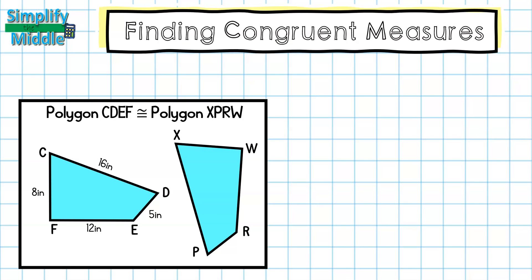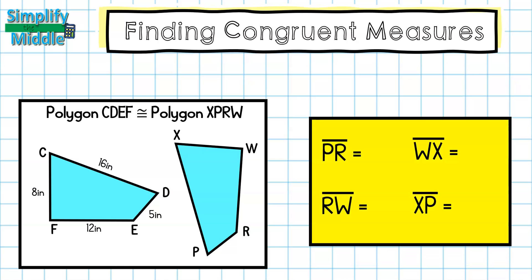Now I'm going to start finding the actual measures using the congruency statement. Line segment PR is written in the second and third position, so I find the second and third position on my first polygon, which is DE. That measure is five inches, so line segment PR is also five inches. Next, line segment RW is in the last two positions. EF are in the last two positions, and that measure is 12 inches, so line segment RW is also 12 inches.